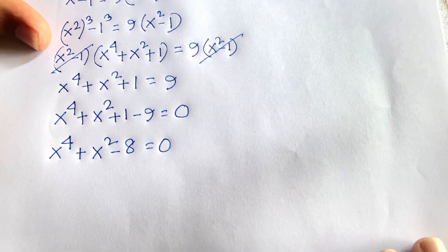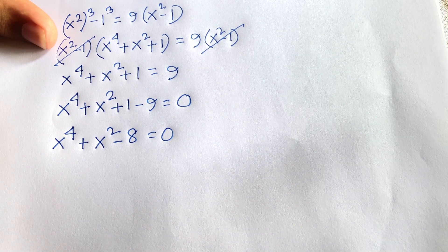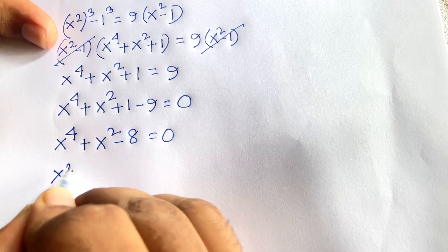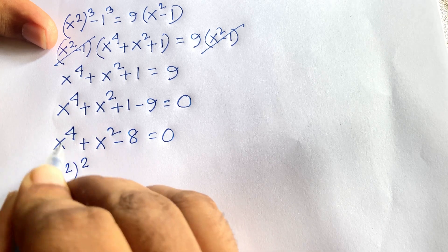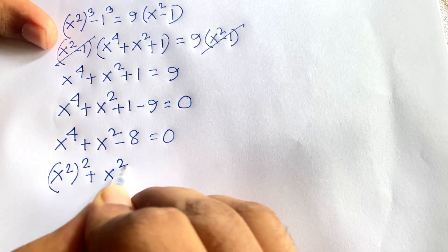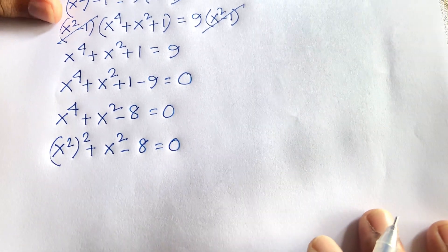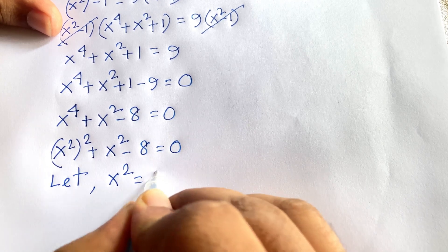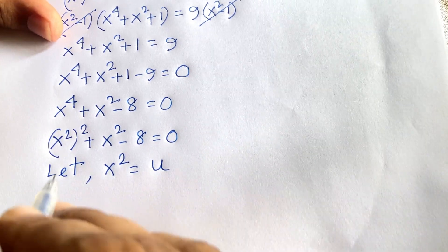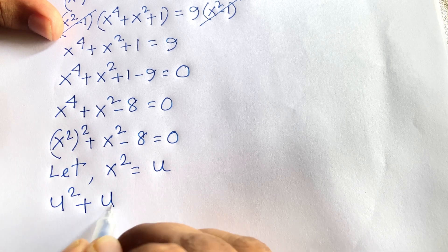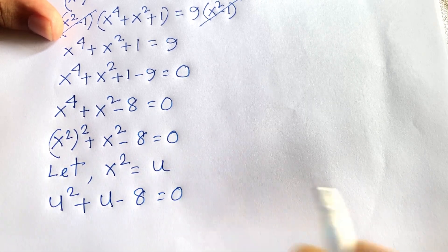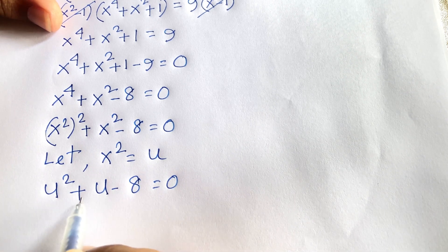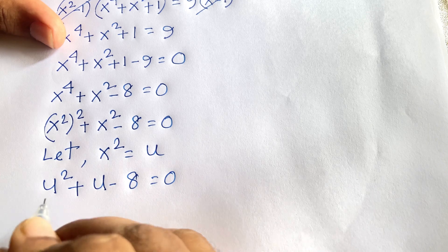This is a quadratic equation in x^2. We can write it as (x^2)^2 + x^2 - 8 = 0. Let u = x^2, then the equation becomes u^2 + u - 8 = 0, where a = 1, b = 1, and c = -8.